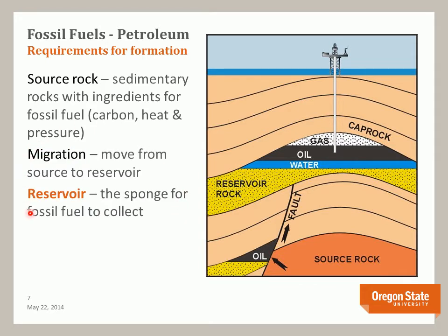The third requirement is a reservoir — this is like a sponge where fossil fuel collects; it frequently has significant pore space. The material starts filling those spaces as it moves from the source rock. Note that in many petroleum reservoirs the liquids separate based on density, with water at the bottom, oil above it, and gas on top because it has the lowest density.